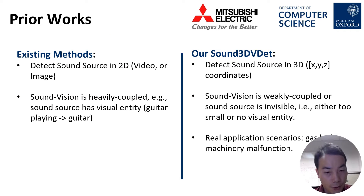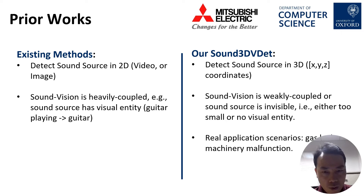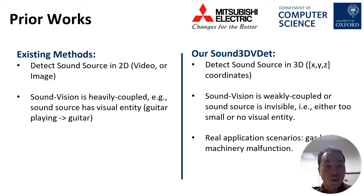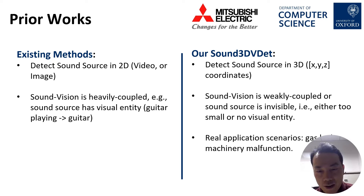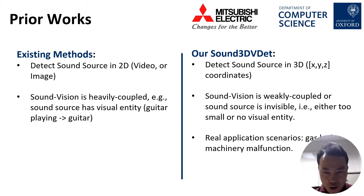Comparing with existing methods, existing methods just detect the sound source in 2D domain — they just localize or detect the sound source in videos or images — and further assume that the sound and vision are heavily coupled, meaning the sound source has very obvious visual entities. For example, guitar playing sound comes from the guitar, which can be directly detected visually. In our case, we detect the sound source in 3D coordinate systems and assume that sound and vision are only weakly coupled, meaning the sound source may not be visible but must lie on the physical surface. This reflects real scenarios, for example in gas leak or machinery malfunction.